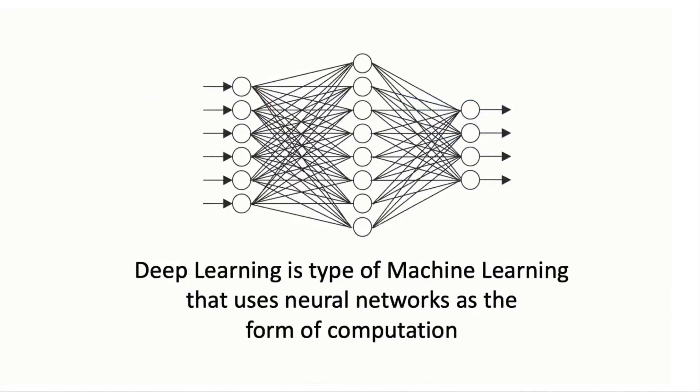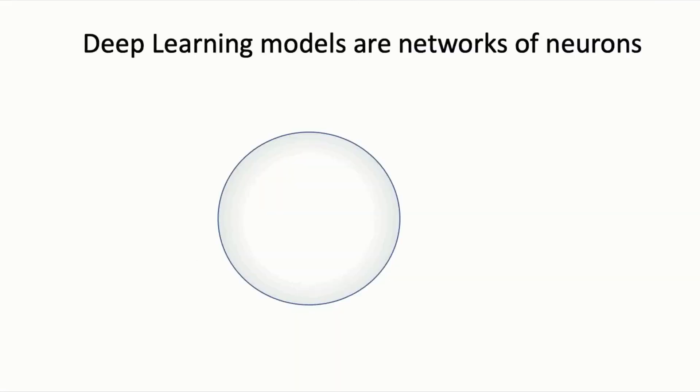Deep learning is a type of machine learning where the computations are in the form of a neural network. A neural network is a type of model composed of many individual computing units, also known as neurons.